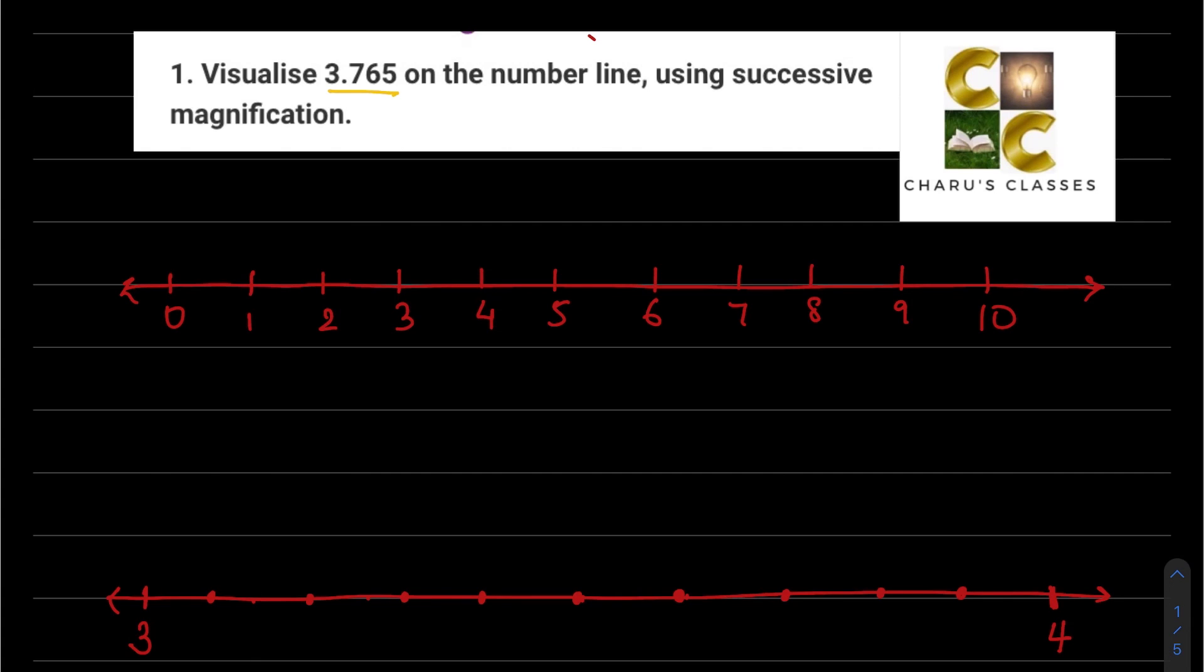So this number is 3.765. First I made a number line. It's a positive number, so 0 on the right hand side is 0, 1, 2, 3, 4. I have not shown negative numbers. Now 3.765, this comes between 3 and 4, so I will magnify between 3 and 4.